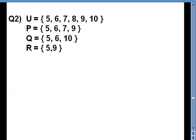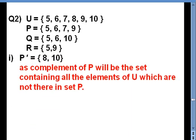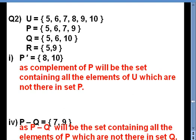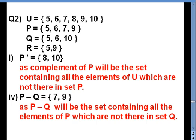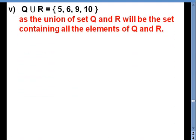Moving to question 2, we are given a universal set, set P, set Q, and set R. The first part is to find P complement, which will be all elements of the universal set not in P. The result is P complement equals {8, 10}. For the fourth part, P minus Q is the set of all elements of P not in Q, so P minus Q equals {7, 9}.